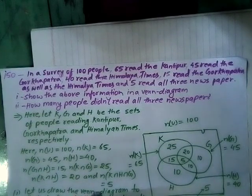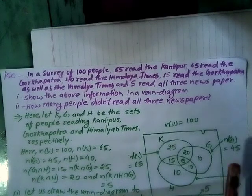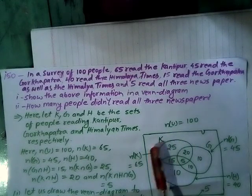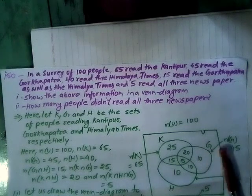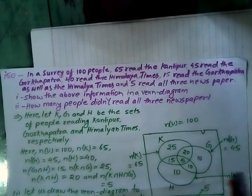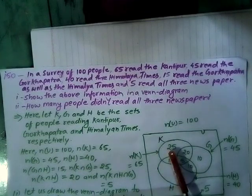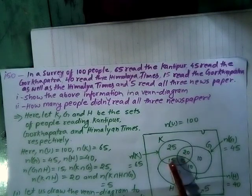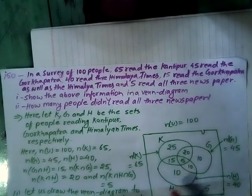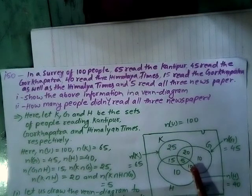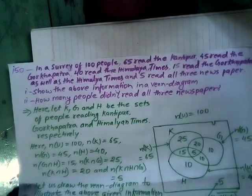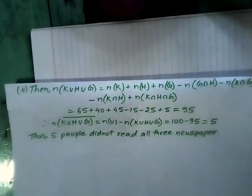Let us draw the Venn diagram to illustrate the given information. The big box denotes NU = 100. First circle K: NK = 65. Second circle G: NG = 45. Third circle H: NH = 40. Only K = 25, only G = 10, only H = 10. NK union H union G complement = 5, which is not present in any of the above given sets.